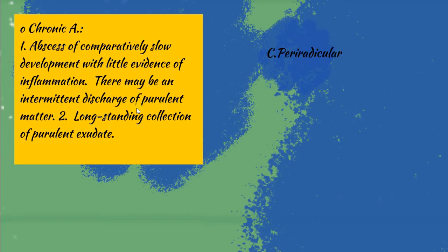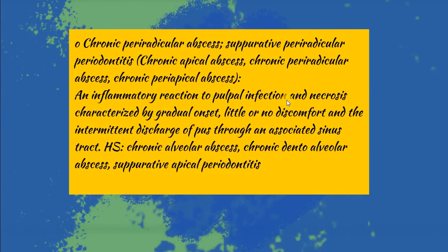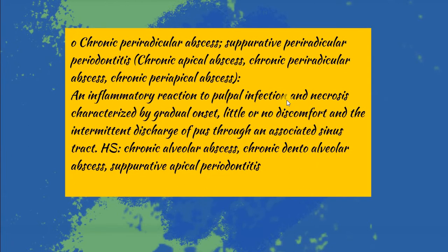Chronic abscesses are of slow development, with little evidence of inflammation, and there may be an intermittent discharge of pus — a long-standing collection of purulent exudate. We also have chronic periradicular abscess, or chronic periapical abscess, which is similar to the acute one but of slow onset, with intermittent discharge or sinus tract formation.